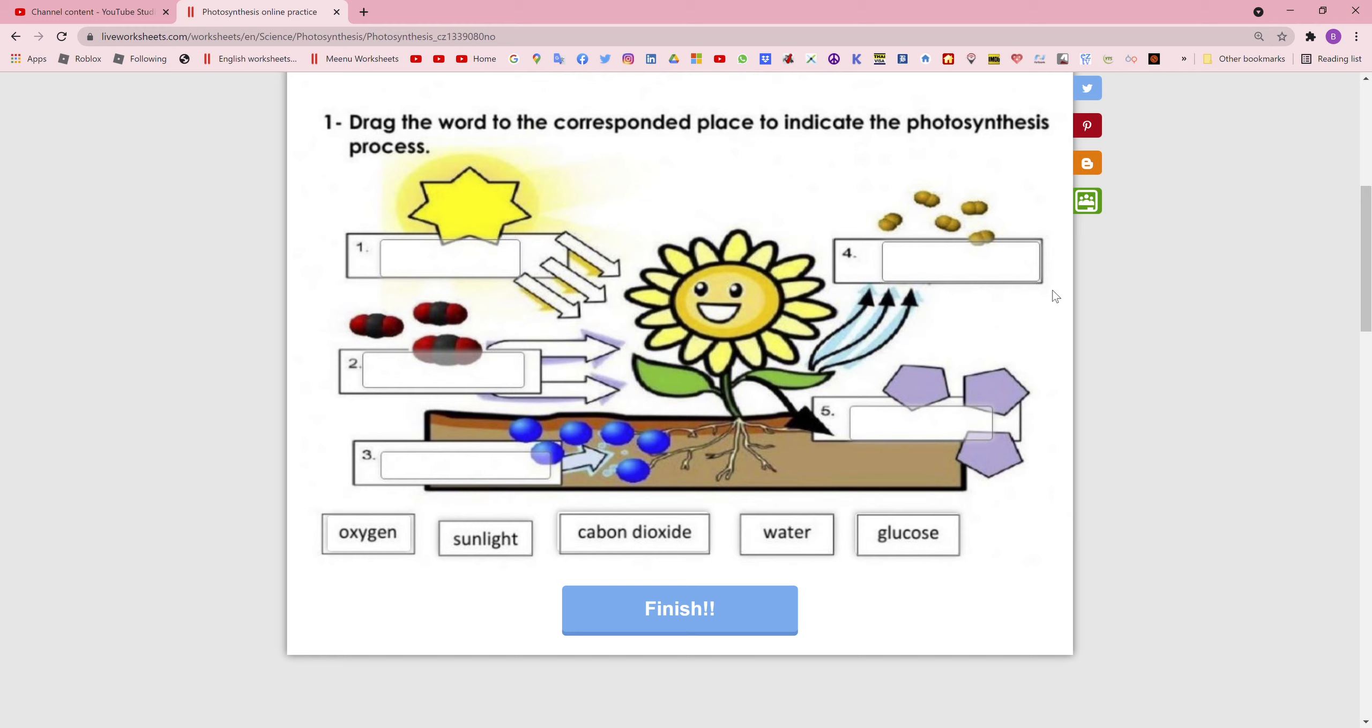You need energy to play. You get your energy from the food you eat. Plants need energy to grow too. Plants get the energy they need from sunlight. Plants use air, water, and sunlight to make their own food.